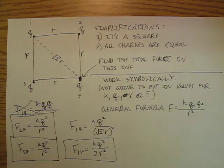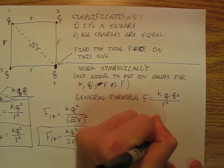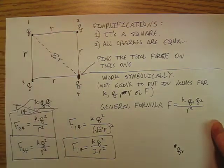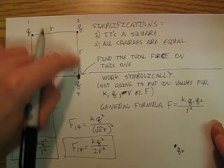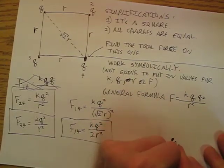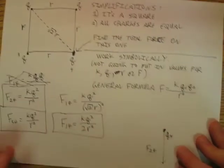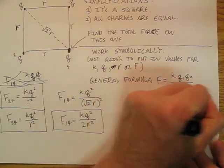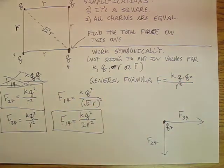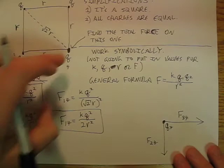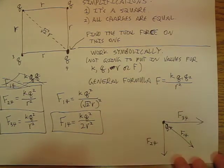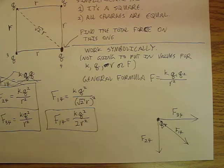We have to add them as vectors now. So since they are all the same charge they're going to be repulsive. So F two four is going to push down this way, so that's going to be F two four. And then F three four is going to push that way, so this is my F three four. And then my F one four, that's going to push down that way, so that's going to be my F one four. And now we have to add them tip to tail.